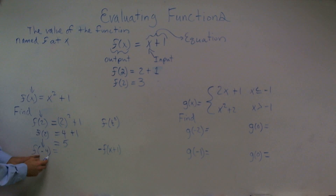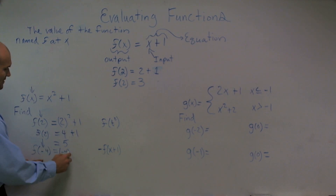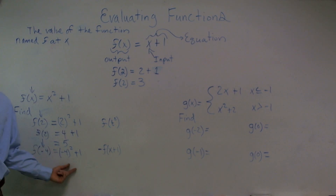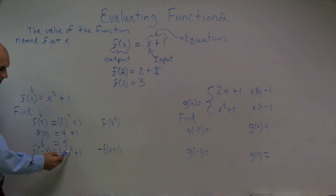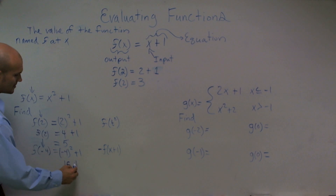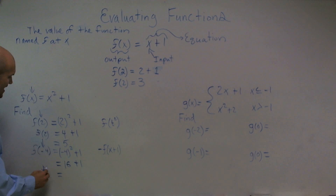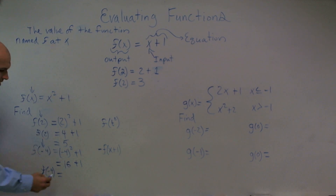For f of negative 4, I'll plug in negative 4 for my input value and see if I can simplify it. Negative 4 times negative 4 is going to give me a positive 16 plus 1. Therefore, my final value of my function f at negative 4 is equal to 17.